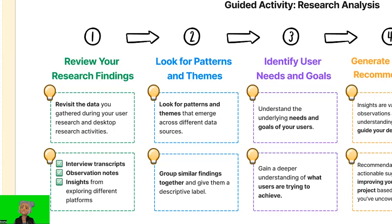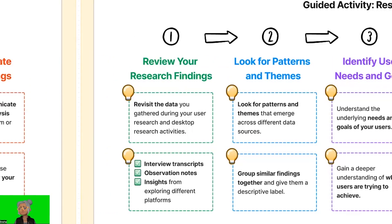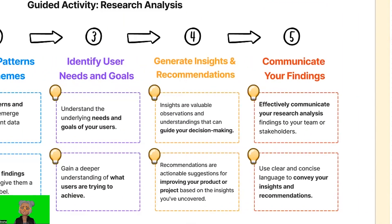Step three: identify user needs and goals. With the patterns and themes in mind, focus on understanding the underlying needs and goals of your users. What are the fundamental motivations that drive their behavior? By identifying these needs and goals, you'll gain a deeper understanding of what users are trying to achieve and how your product can address their needs. Step four: generate insights and recommendations. Based on the patterns, themes, and user needs you've identified, it's time to generate insights and recommendations. Insights are valuable observations that guide decision-making, while recommendations are actionable suggestions for improving your product. Be specific and provide clear explanations for each.